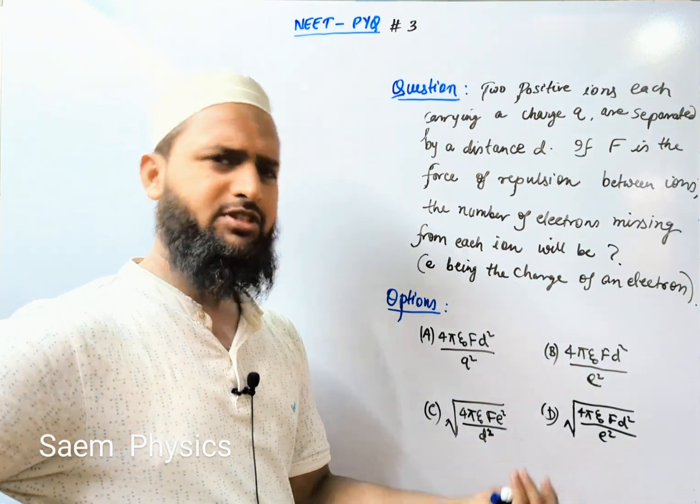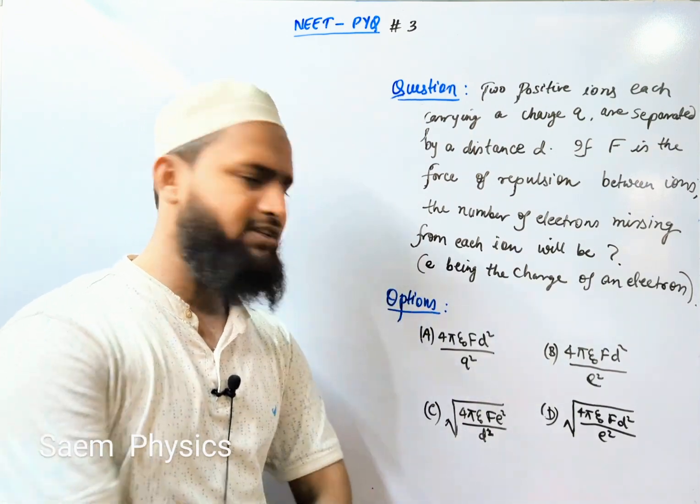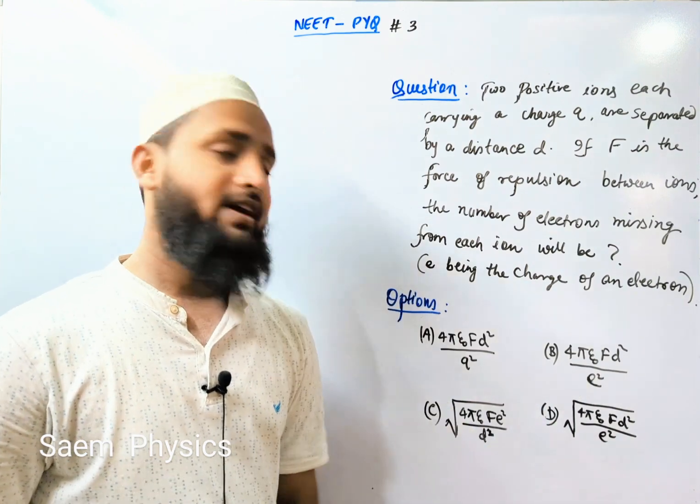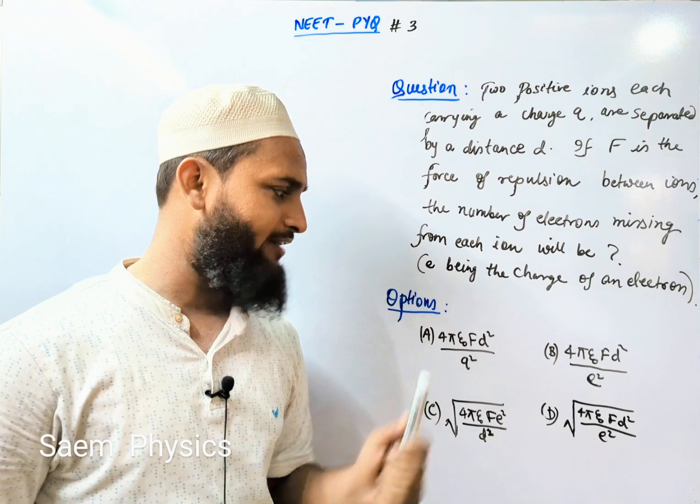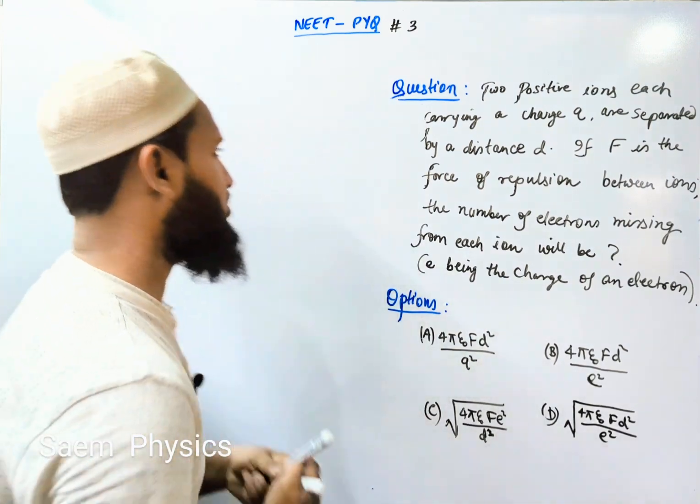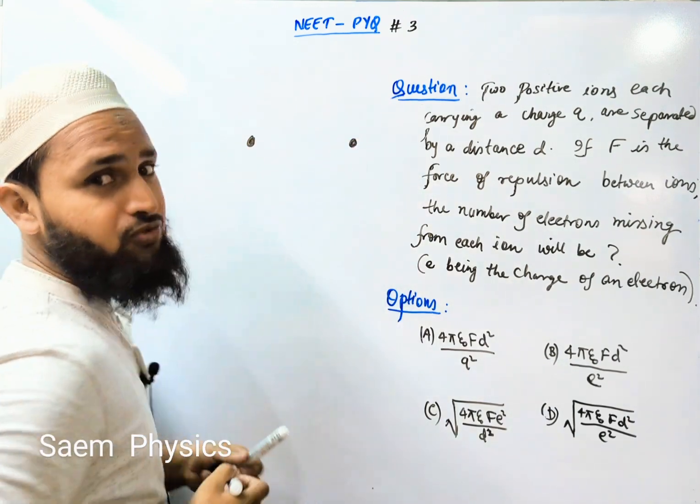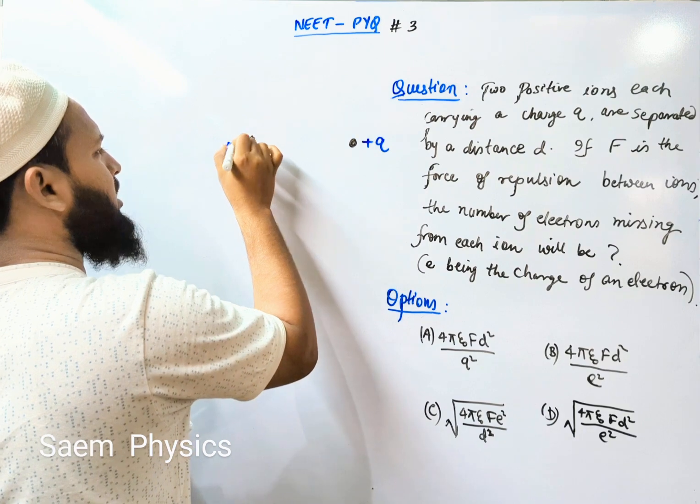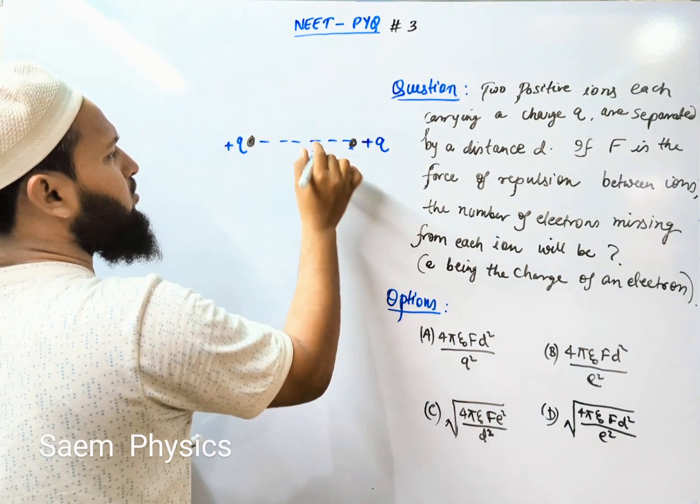Jitne electron per charge, it is one over four pi epsilon. Now for option Q squared by D... Humne electrons nikaal diye bahar yaani ho gaye positively charged aur ye keh rahe hai ki Q charge hai dono par, duri bhi D hai dono ke beech mein.